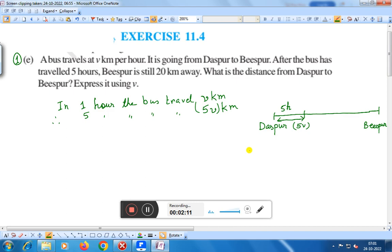And now, after the bus has travelled 5 hours, Bispur is still 20 kilometers away. This distance is 20 kilometers.